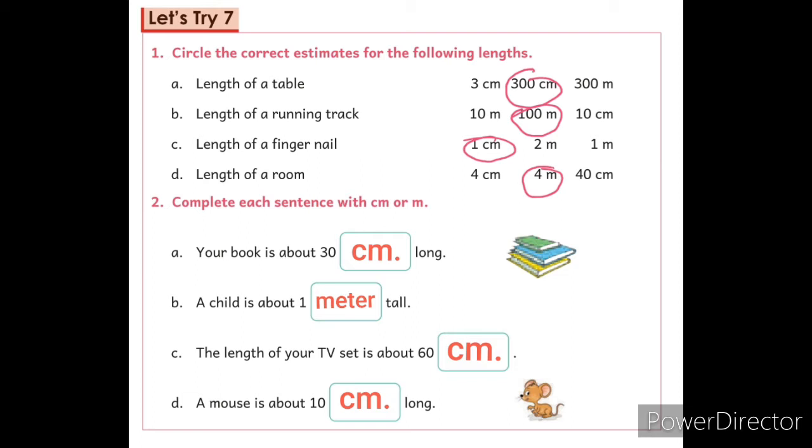C: Length of a fingernail. The answer is 1 cm. So, circle on it.